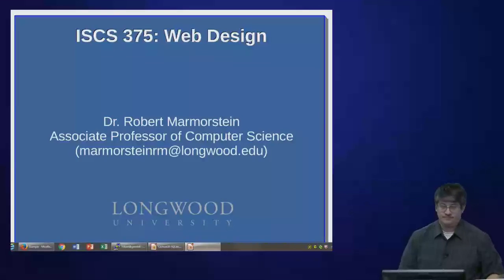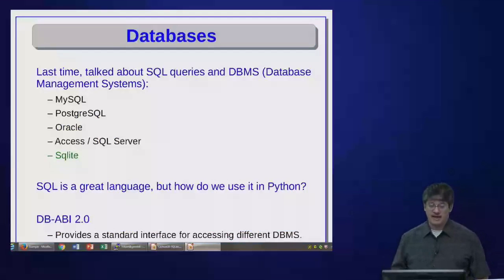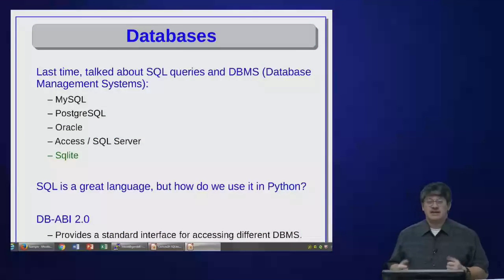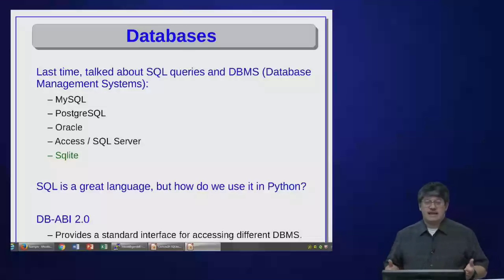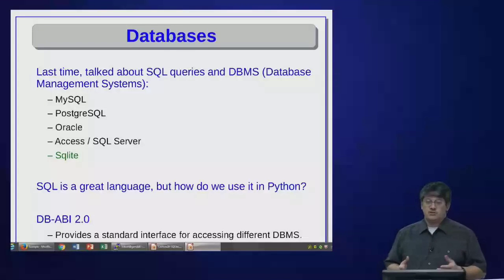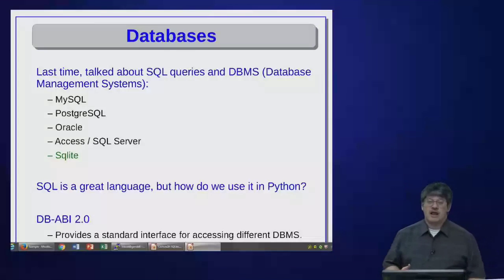Today we're going to talk about a library called SQLite that allows you to access a database from Python. Last time we talked about SQL, Structured Query Language, and we said we can use it to perform queries against the database — we can ask questions and the database will answer them, or we can insert data and create tables. Now we're going to talk about how we can perform those queries from a Python script.